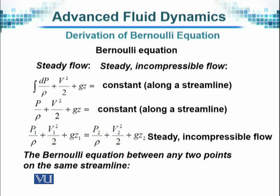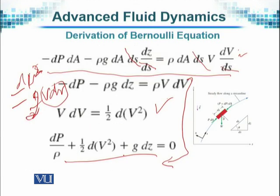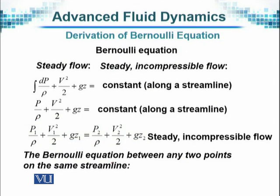Bernoulli's equation for steady incompressible flow along a streamline. So many conditions are there. Once we integrate this equation, we will integrate all these terms. And on the right-hand side it will be a constant, because when we differentiate it that will be 0.